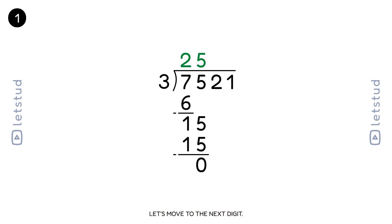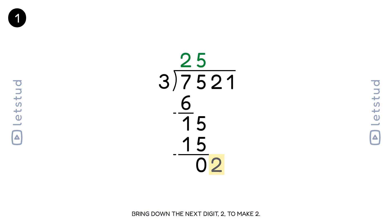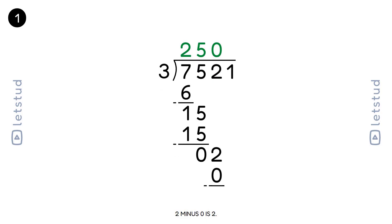Let's move to the next digit. We have a remainder of 0. Bring down the next digit, 2, to make 2. 3 fits into 2 zero times. 0 times 3 is 0. 2 minus 0 is 2.